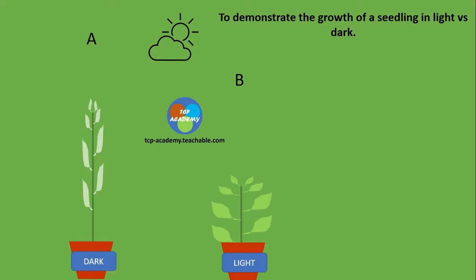We also observed that the leaves are yellow. Plant A's leaves tend to be really pale when compared to B, the plant that is exposed to light.